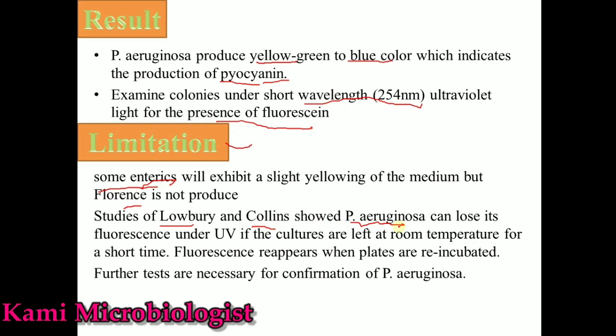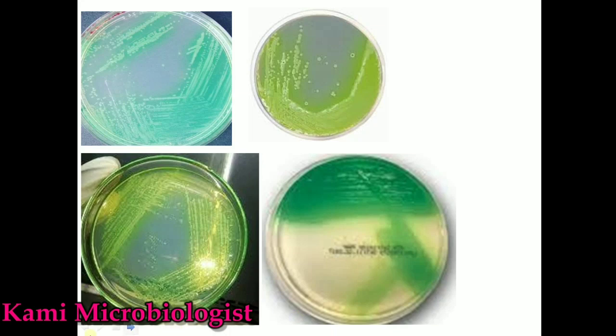This lack of fluorescence occurred because the Pseudomonas was kept at room temperature — if kept at room temperature, it will not produce fluorescence under UV light. To reduce this limitation, the Pseudomonas should be reincubated, after which it can easily be visualized under UV light for fluorescence. Therefore, we conclude that further tests should be performed for the complete identification of Pseudomonas aeruginosa. As we can see in the pictures, these are different strains of Pseudomonas aeruginosa growing on this media.